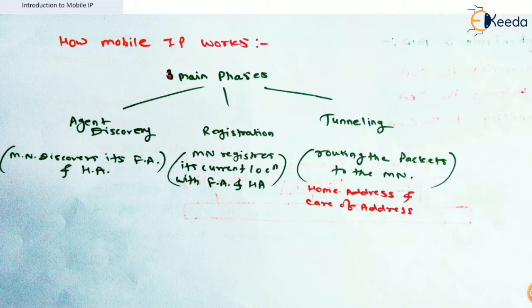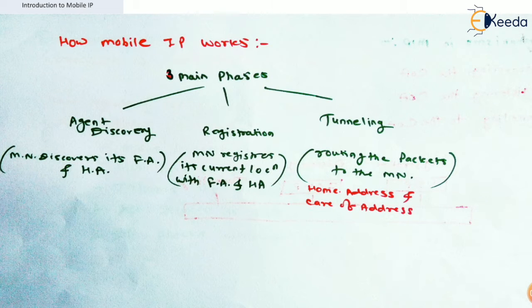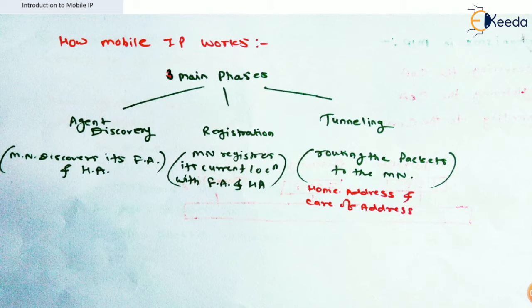In the third phase, we are now discussing tunneling, which is the final phase of Mobile IP. It is the most important phase — here, routing the packets to the mobile node happens. The mobile node has an IP address belonging to the home network, but currently it is present in a foreign network. So information received at the home network needs to be forwarded to the mobile node in the foreign network, and a tunnel is established between the home network and foreign network.